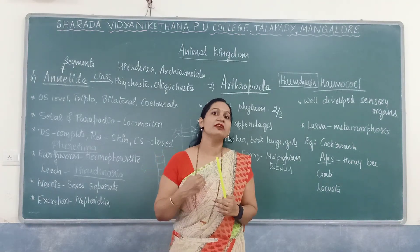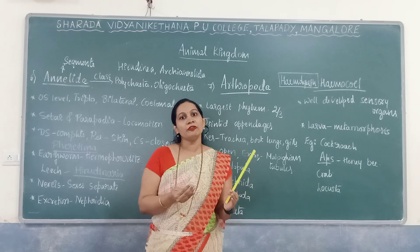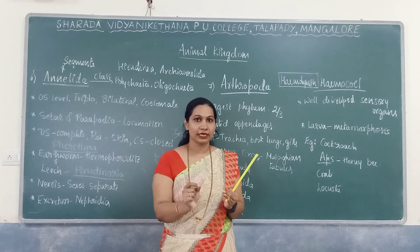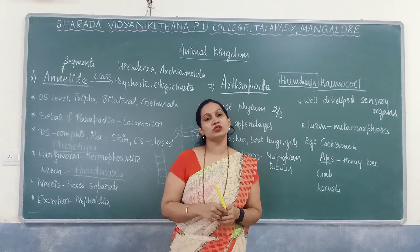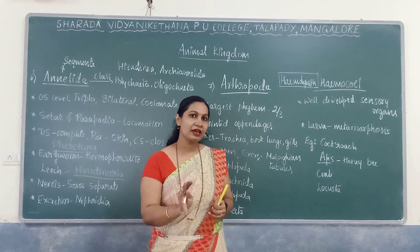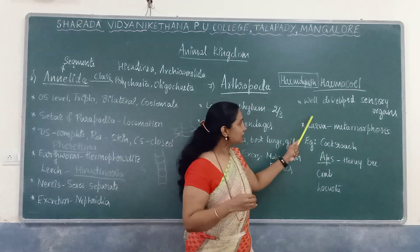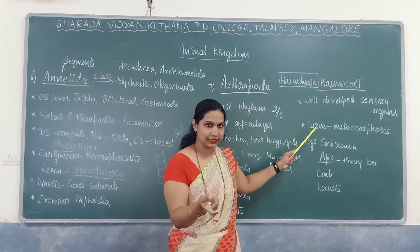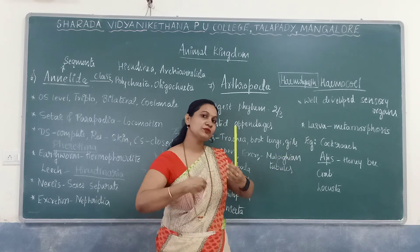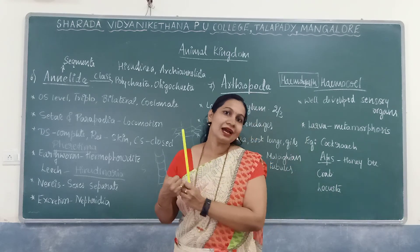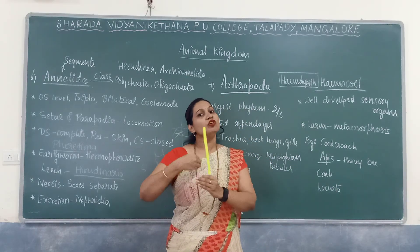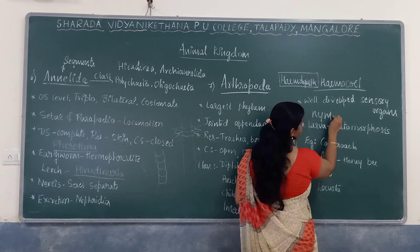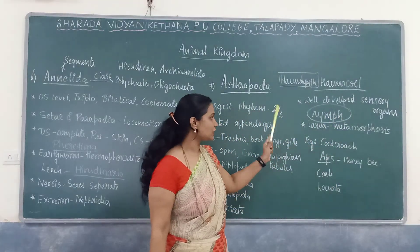In direct development — like in humans — there is no larval stage. In indirect development — like in frog, where the larval stage is a tadpole — the organism passes through a larval stage. In arthropods such as cockroach, the larva looks similar to the adult but still undergoes metamorphosis, shedding the exoskeleton to form the adult. Their larval stage is known as a nymph.